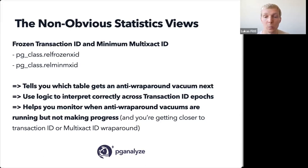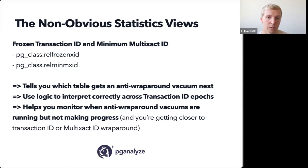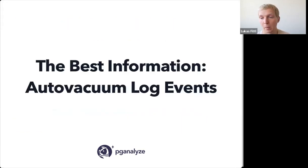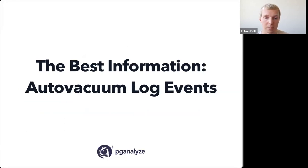If you're ever curious how we've specifically implemented this, the pganalyze collector source code is on GitHub. But really, our goal is that when anti-wraparound vacuums are not making progress, we use the relfrozenxid fields to understand how far the frozen XID has advanced. The people who've worked with this auto-vacuum problem for a long time would probably agree: the best information you can get is the auto-vacuum log events. If you take one thing away from this, look at your logs, not just the statistics tables.